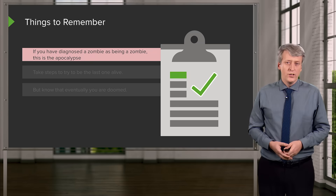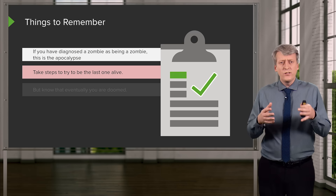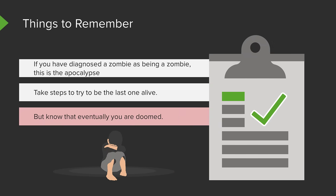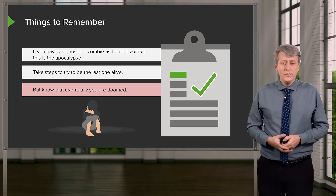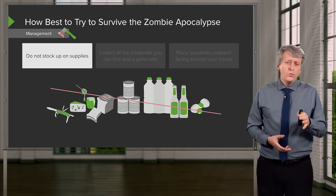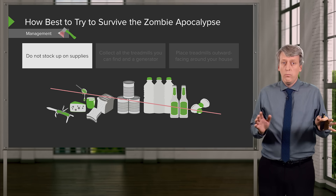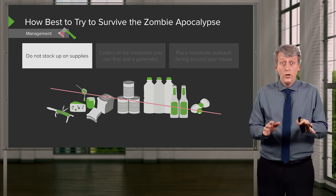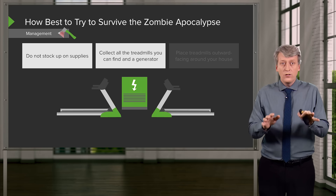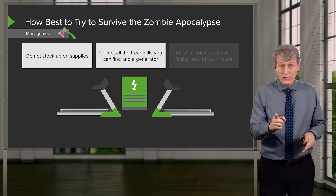If you have diagnosed a zombie as being a zombie, this is the apocalypse. Try to take steps to be the last one alive. But know that eventually you are doomed. There is no help. No one is coming to save you. You are going to die. So, don't stock up on supplies — there is no point. You don't have much time. Collect all the treadmills you can find and a generator, because the electricity is going to go out.